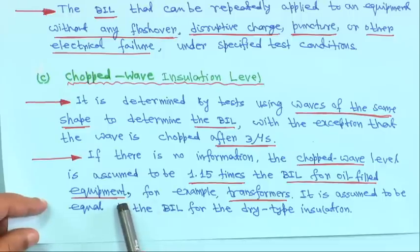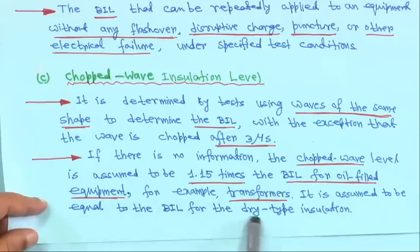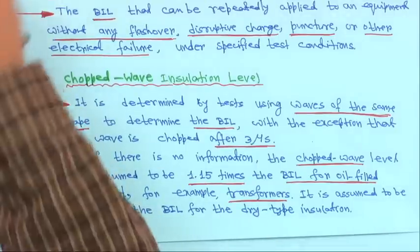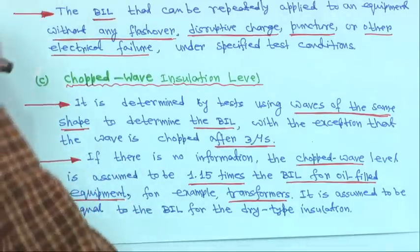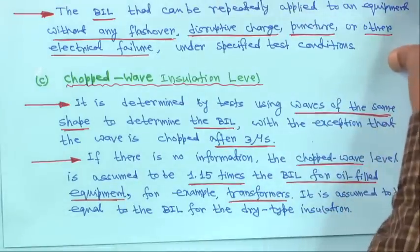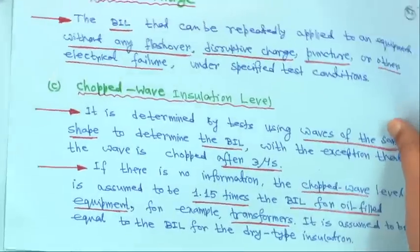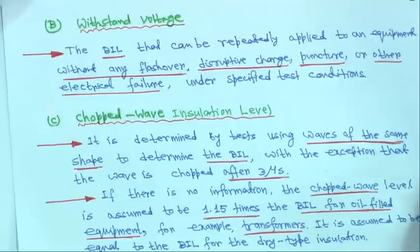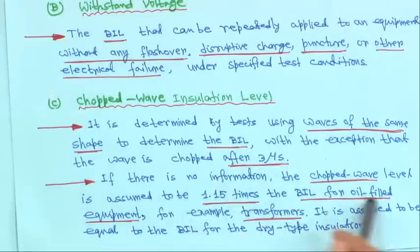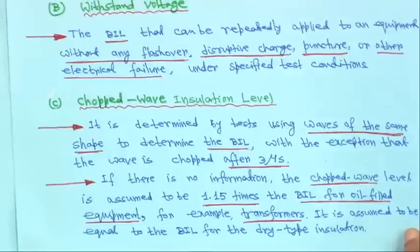If there is no other information, it is assumed to be 1.15 times the BIL for dry-type insulation. Similarly, 1.15 times the BIL is assumed for oil-filled equipment, such as transformers, for the chopped wave test level.